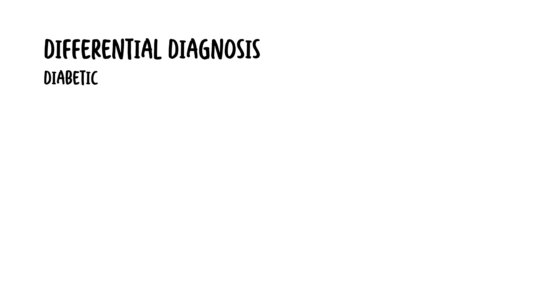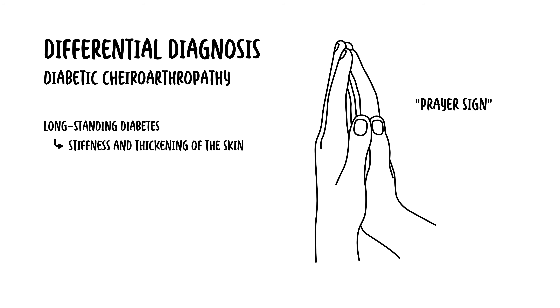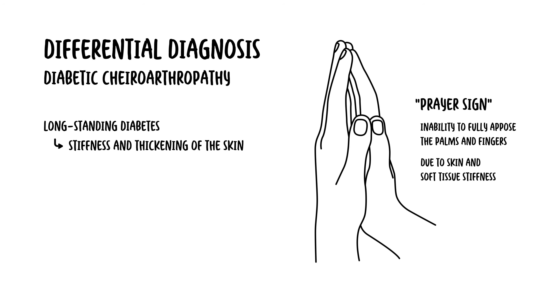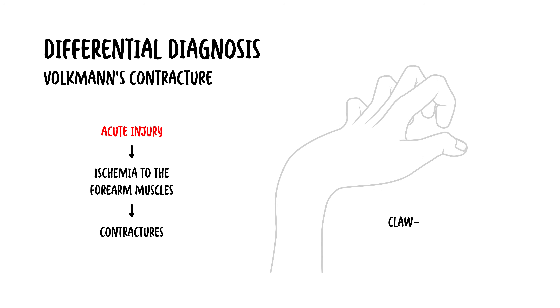Diabetic cheiroarthropathy is seen in patients with long-standing diabetes and causes stiffness and thickening of the skin of the hands. The key distinguishing feature is the prayer sign, indicating that the person is unable to oppose the palms and fingers due to the skin and soft tissue being stiff — it is really the whole hand. Volkmann's contracture is a deformity caused by ischemia in the forearm muscles. Unlike Dupuytren's, Volkmann's contracture is typically the result of acute injury and affects the forearm muscles, leading to a claw-like deformity of the hand.